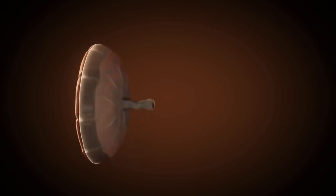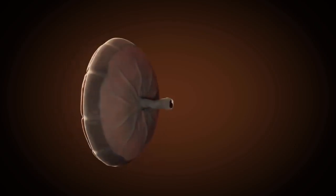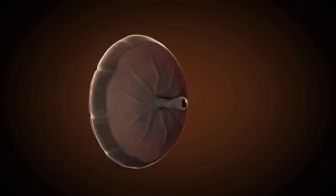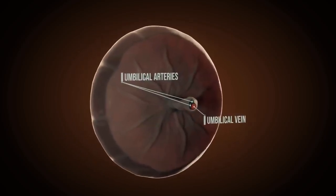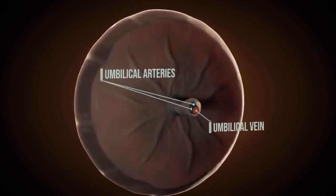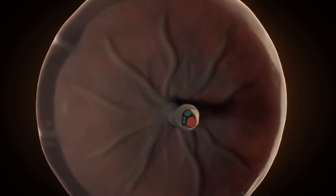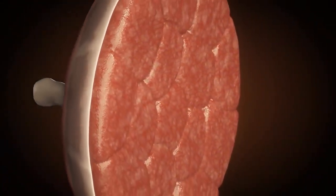At first, the fetus is supplied by the body stalk and yolk sac, but then more and more by the umbilical cord and placenta. Since the fetus possesses both the DNA of the mother and of the father, the blood of the fetus must not mix with the blood of the mother. The placenta is responsible for this. It is responsible for the exchange of substances between mother and fetus.